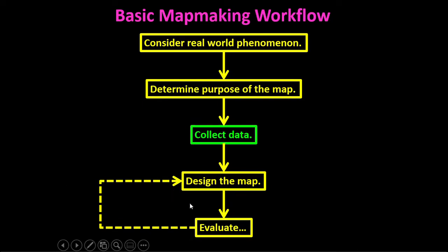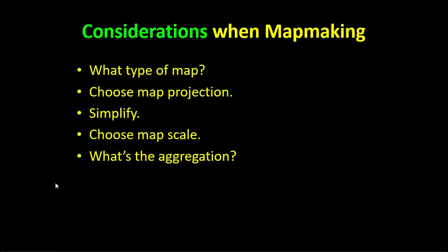When designing a map and collecting data, there are five key considerations. First, what type of map do you want to create? Second, choosing a map projection — more important when looking at large global maps where area distortion matters. Third, simplify — keep it simple. Fourth, choosing a map scale — how much you'll zoom in or out. Fifth, what's the aggregation — are you using county, state, or township-level data?